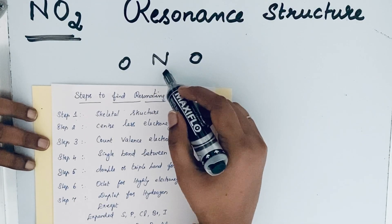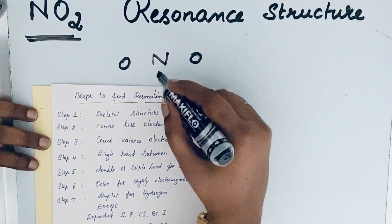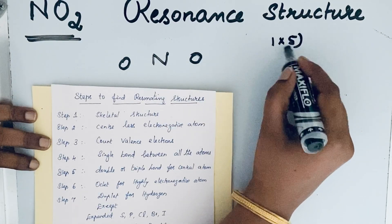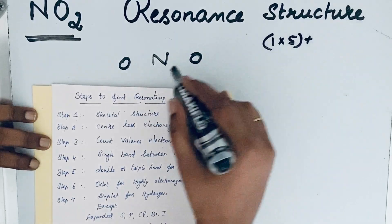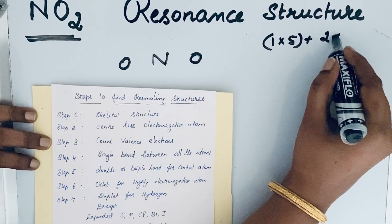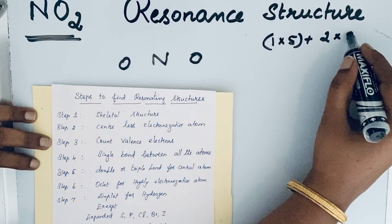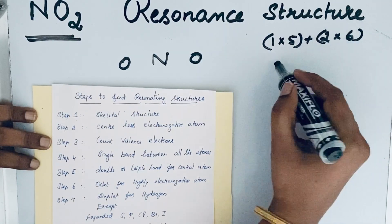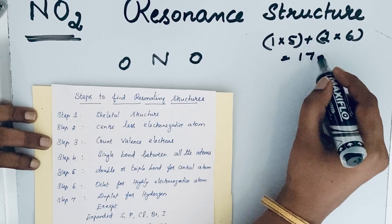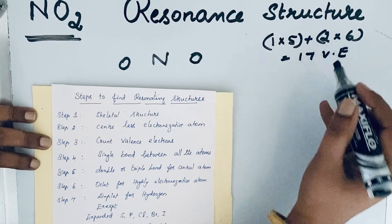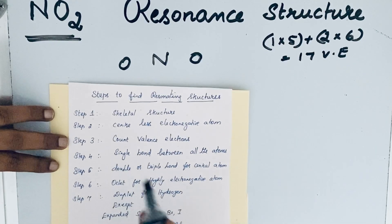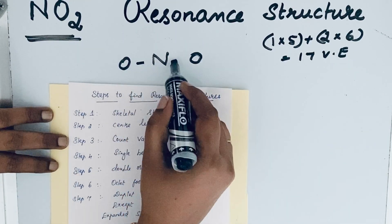Step 3: count the valence electrons. For nitrogen, the valence electron count is 5, and there is only one nitrogen, so 1 × 5. For oxygen, there are two oxygen atoms, so 2 × 6. This gives us a total of 17 valence electrons. Now come to Step 4: draw a single bond between all the atoms.